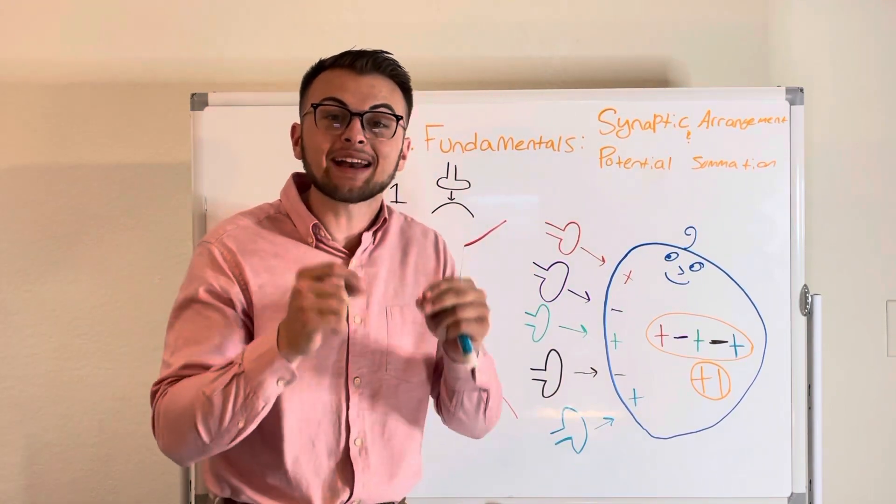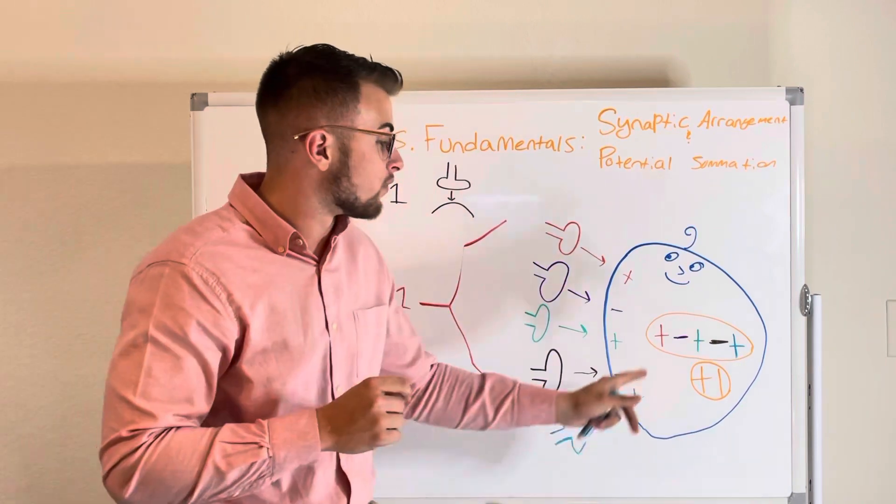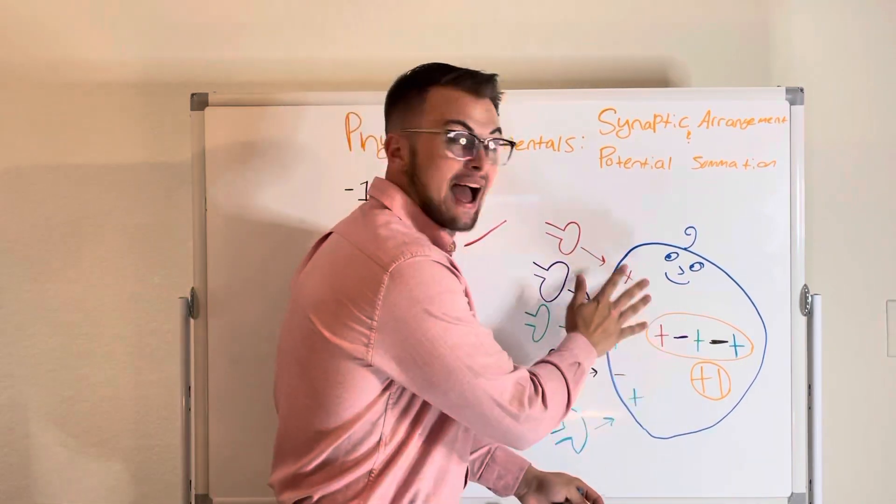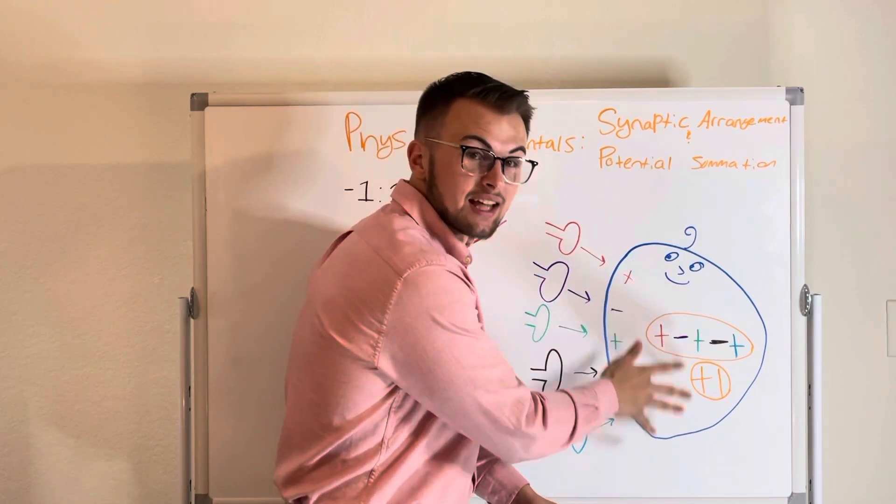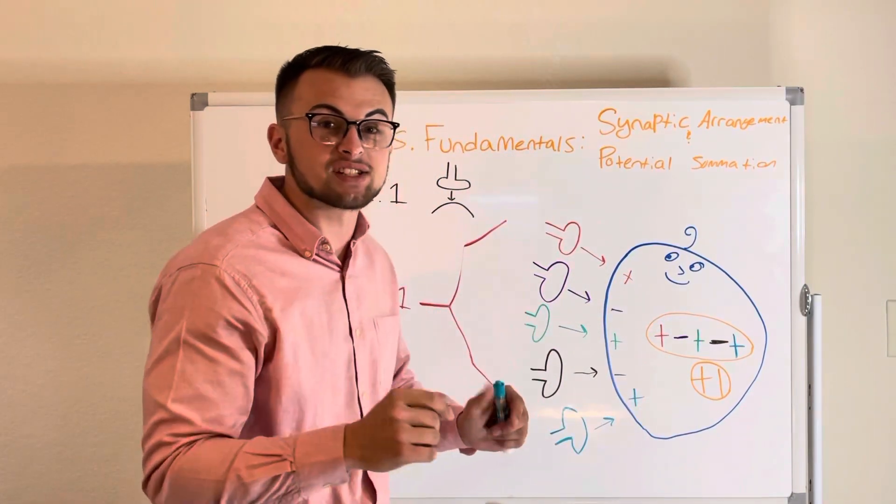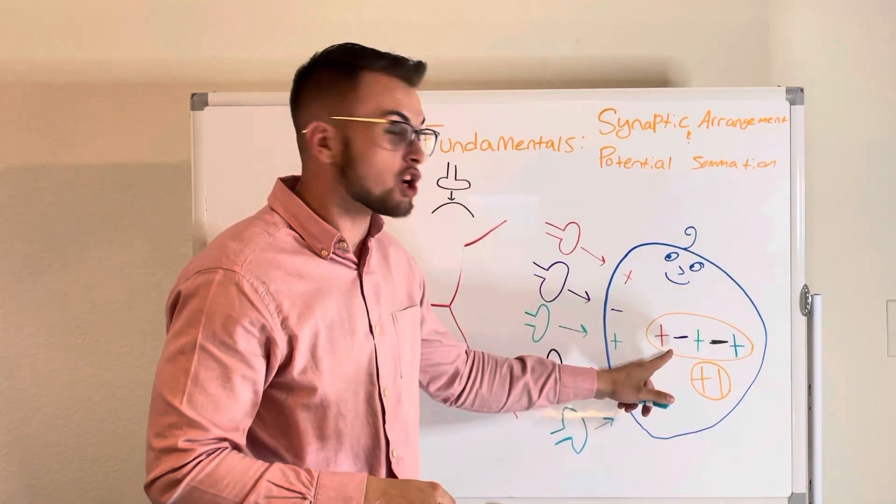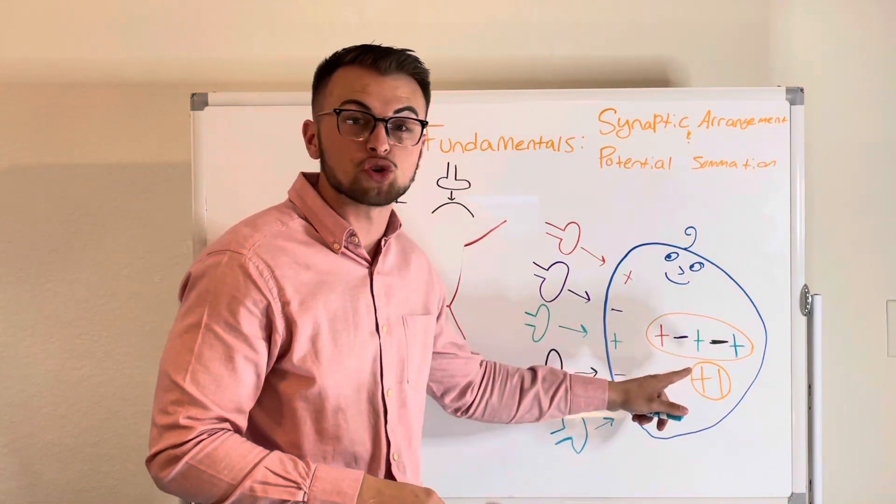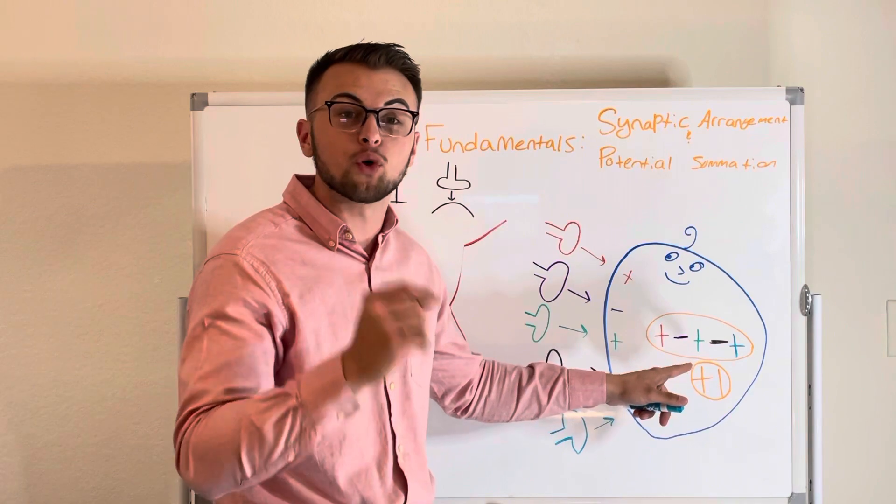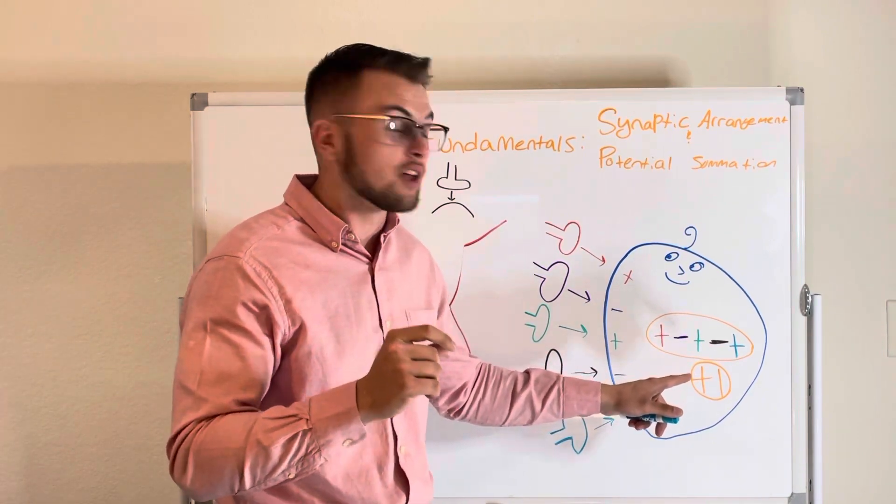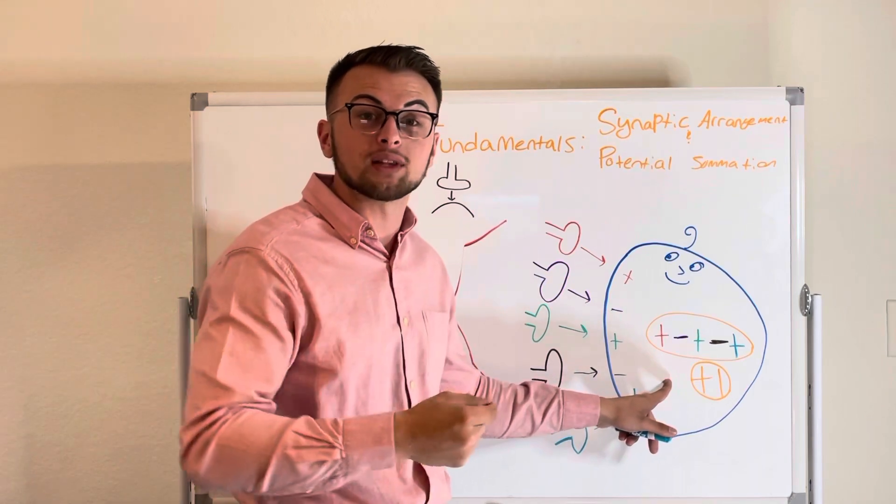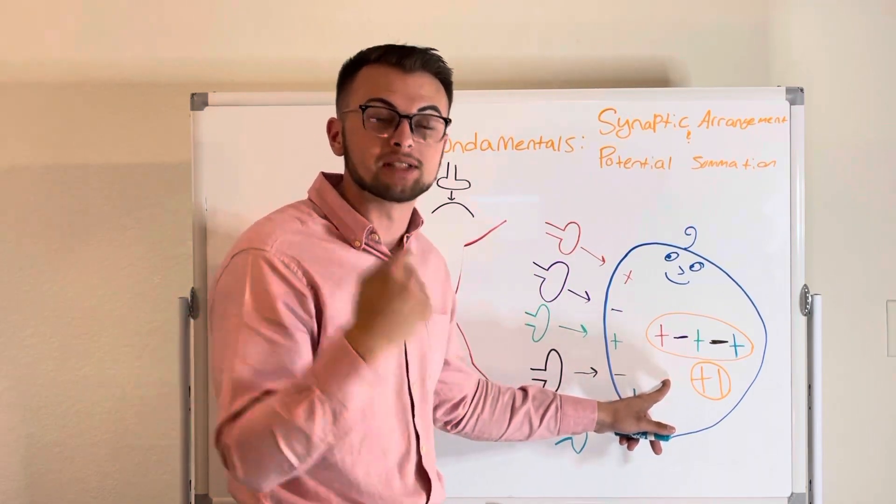To find out if our cell will fire an action potential, we must add up all of our postsynaptic potentials together. In this case, our cell had just enough positive potential to reach threshold for its voltage-gated sodium channels. This means that our cell will subsequently fire an action potential.